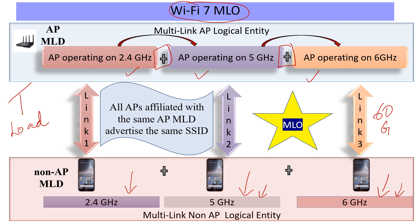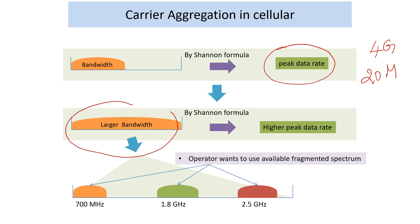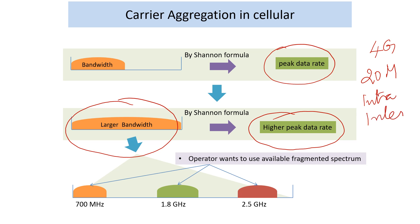What about carrier aggregation in cellular? In cellular, carrier aggregation happened during the 4G era. Specifically, LTE-Advanced was the trigger, because of the limitation of the LTE carrier bandwidth definition to 20 MHz. To get higher peak data rates as envisaged in the IMT Advanced standard, they had to look at alternative ways of getting a larger bandwidth, and that is where they brought in carrier aggregation — initially targeting higher peak data rates through a variety of intraband as well as interband carrier aggregation schemes.